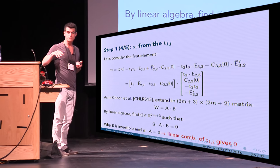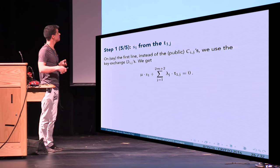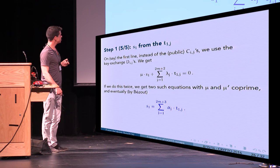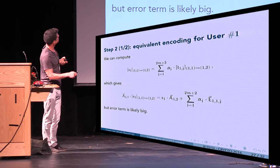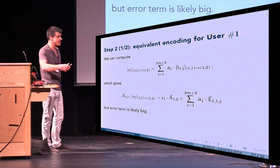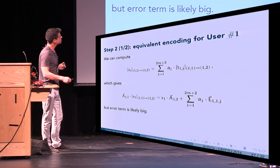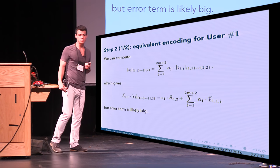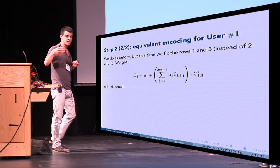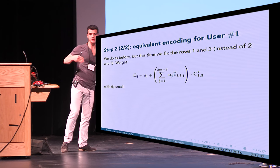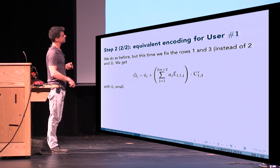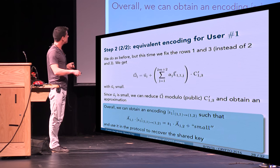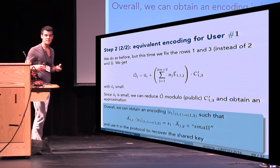Since only public elements are used, replacing one public element with a secret one gives a relation between s1 and the t_ij values. The problem is the resulting encoding has a very large noise vector, so it can't be used directly in the protocol. Instead, we run the same procedure using rows one and three rather than rows two and three, which yields an equivalent relation. We subtract to cancel the large error, obtain an element with small error satisfying what we need, use it in the protocol, and recover the shared secret.